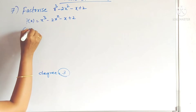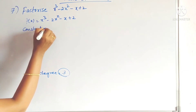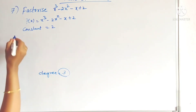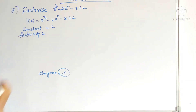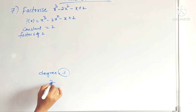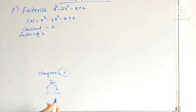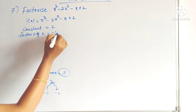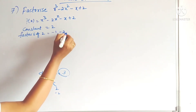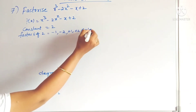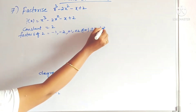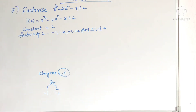For that, take the constant term. The constant is 2 here, so find the factors of 2 first. Factors of 2: 1 into 2 is 2, and minus 1 into minus 2 is also 2. So the factors are minus 1, minus 2, plus 1, and plus 2 — or otherwise you can write plus or minus 1 or plus or minus 2. These are the factors of 2.